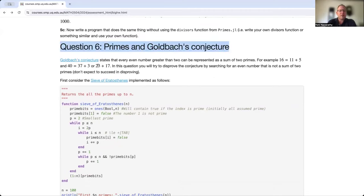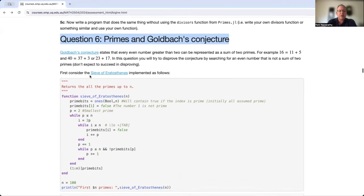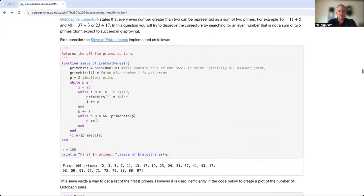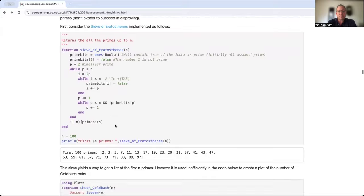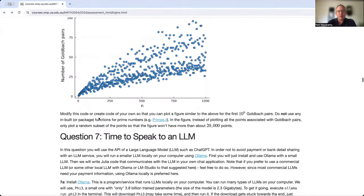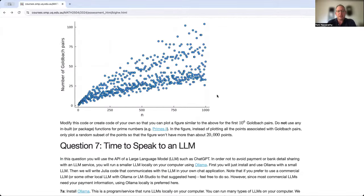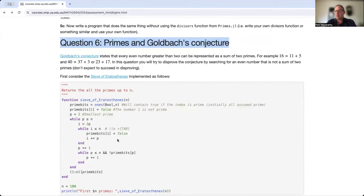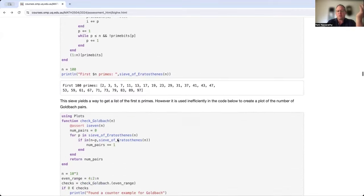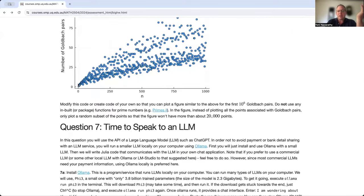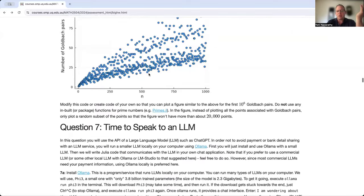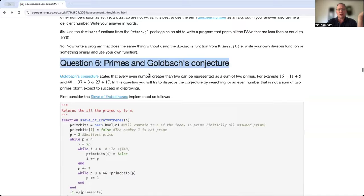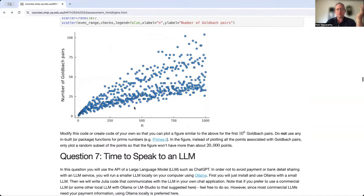Question six is an all-time course classic. It's been in all the years, the Goldbach conjecture. You get code that works, but it's horribly inefficient in the way that it works and you can't create the plot like this, say up to a million with this code, but you need to think what's inefficient, what you can do to improve, what you can do to actually make the similar type of plot associated with Goldbach conjecture up to a million. So enjoy that question.